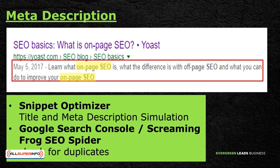The meta description should contain a focus keyword — if the search keyword matches text in the meta description, that's a big advantage. Google will be more likely to use that meta description highlighted in the search results. The meta description should also be unique; duplicate meta descriptions make all pages seem like the same thing. You can check for duplicate meta descriptions by visiting Google Search Console under Search Appearance, or use the Screaming Frog SEO Spider. You can also use a snippet optimizer to simulate how your title and meta description will look when they appear in the SERPs.